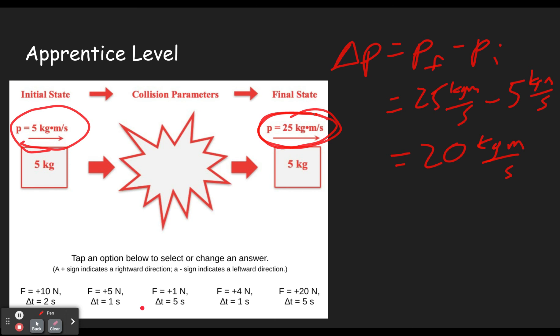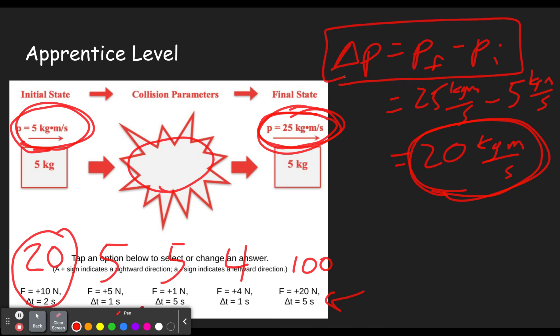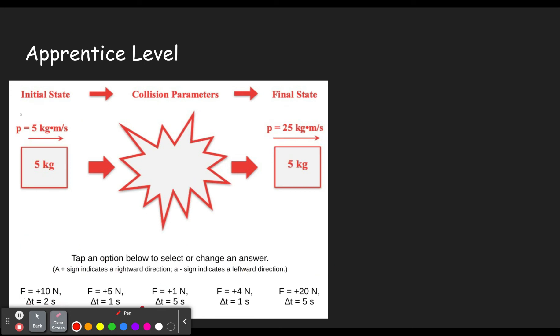So then we come down to all these forces, and we have to figure out what the impulse is. I'm just going to write the numbers to save some time. So this one over here is 20 times 5, so this would be a 100 kilogram meter per second change. That does not match what the collision parameters would need to be, because the collision parameters would need to cause that much change in momentum in order to go from 5 to 25 kilogram meters per second. The next one here, 4 times 1 is 4. 1 times 5 is 5. 5 times 1 is 5. 2 times 10 is 20. So we see that this one is going to cause the change we have. So we click on that one, that's the collision parameter, and we're good to go.